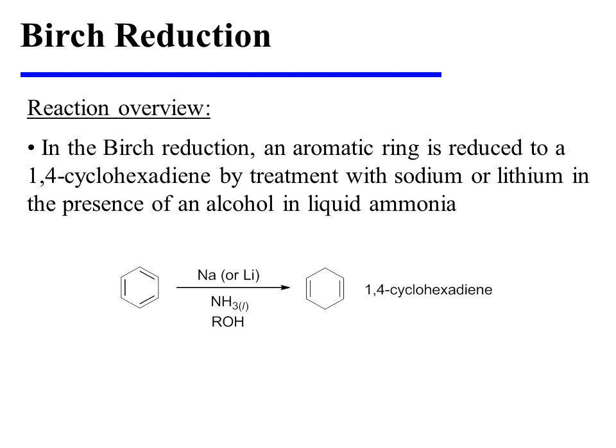In the Birch reduction, an aromatic ring is reduced to a 1,4-cyclohexadiene by treatment with sodium or lithium in the presence of an alcohol in liquid ammonia.